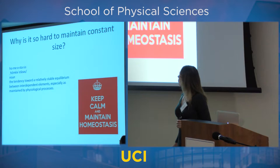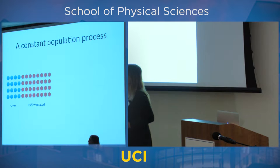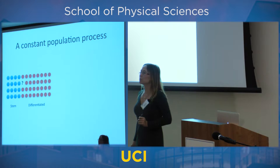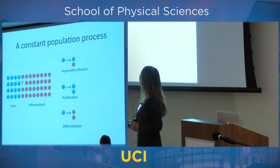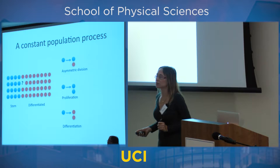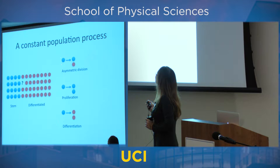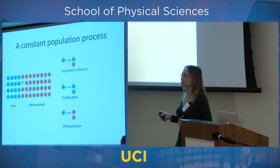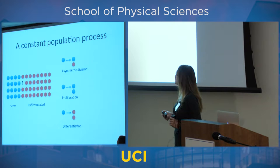What I'm going to concentrate on is how the body maintains homeostasis and what happens when it goes wrong. Here's a simple diagram: blue cells are stem cells, red ones are differentiated cells. Suppose a cell dies — it's scheduled to die, that's normal. There are three types of stem cell divisions that can replace the lost cell. First: asymmetric division — one daughter is a stem cell, the other is differentiated. Second: proliferation — both daughters are stem cells. Third: differentiation — both daughters are differentiated.